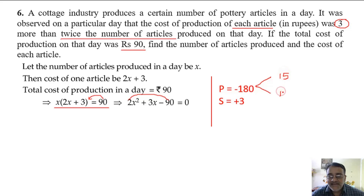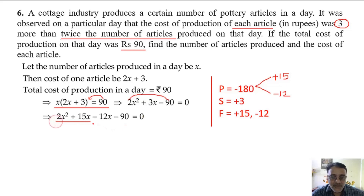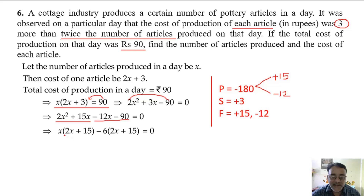The two factors are 15 and 12. The sign of the sum goes on the larger number, so plus 15x, and the other number gets the opposite sign, minus 12x. We split the middle term as plus 15x minus 12x. Taking x common from the first two terms, and minus 6 common from the last two gives (2x plus 15). So we take (2x plus 15) common.